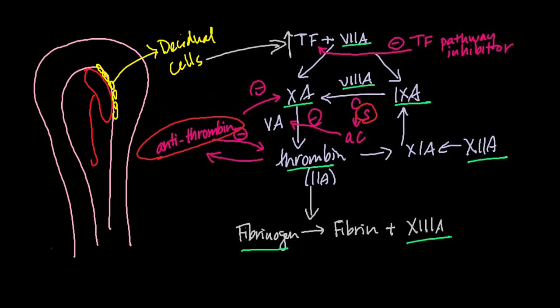These factors, along with myometrial contraction, all contribute to decreasing the risk for excessive bleeding at the time of delivery. Factors typically return to normal levels 6 to 12 weeks postpartum.